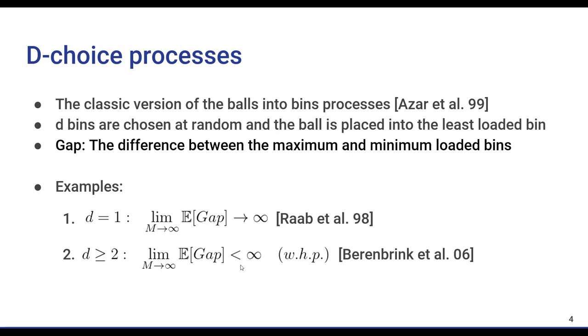The D choice process was first studied by Azar et al. and has been heavily studied since and is very well known. For example, we know thanks to the works of Raab et al. that if d equals 1, which is just putting the ball in a random bin, the gap diverges as the number of balls increase. And also, it does so with high probability.